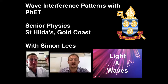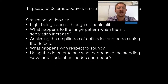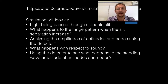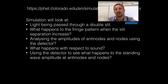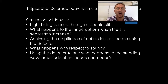Welcome to this senior physics video on Leiden waves. We're going to look at wave interference patterns using the PhET simulation. We'll look at how light passes through a double slit and the fringe patterns produced, what happens when we increase the slit separation, and analyze amplitudes of anti-nodes and nodes to show constructive and destructive superposition. We'll also look at the same concepts applied to sound.